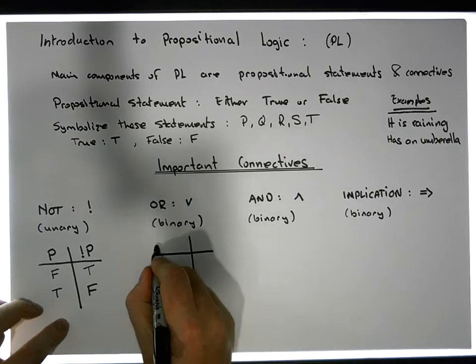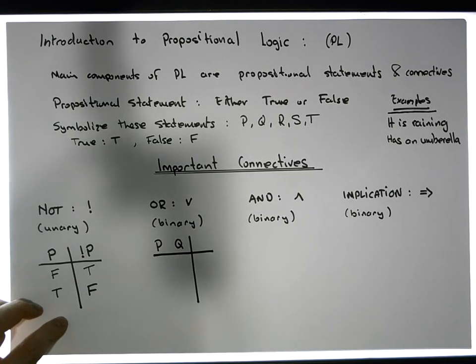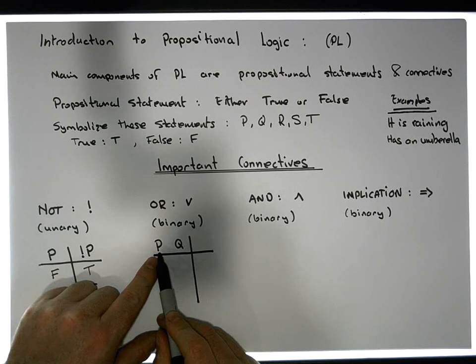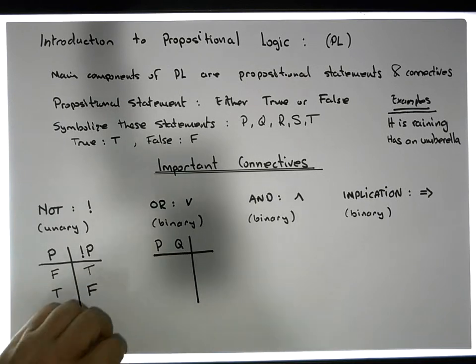Let's symbolize them by P, and let's use a Q to symbolize the second proposition. The P, we say, is the left operand, the Q is the right operand.